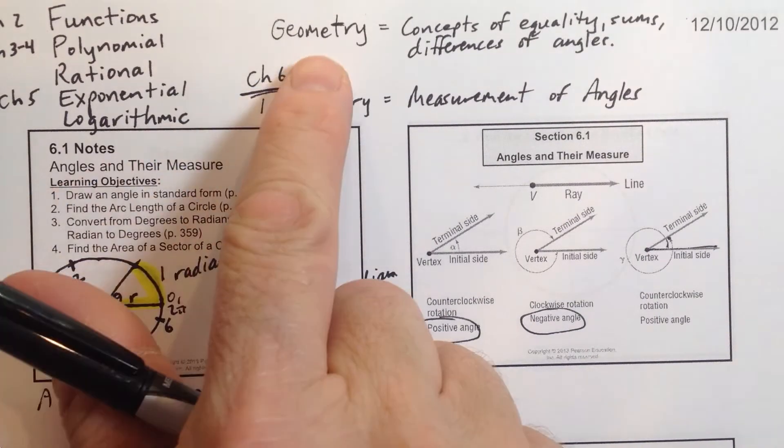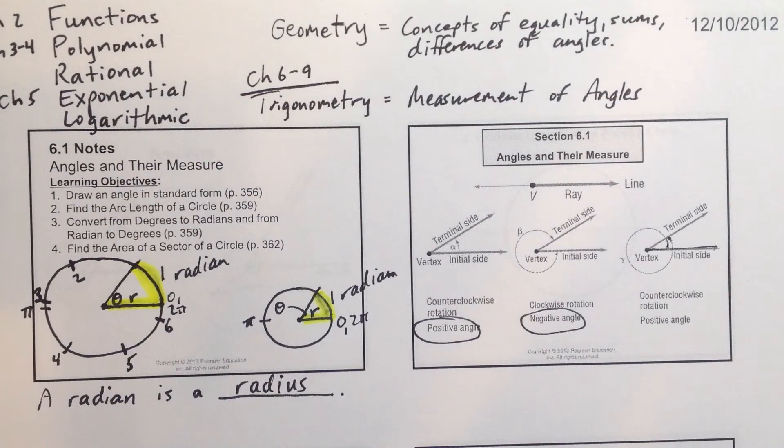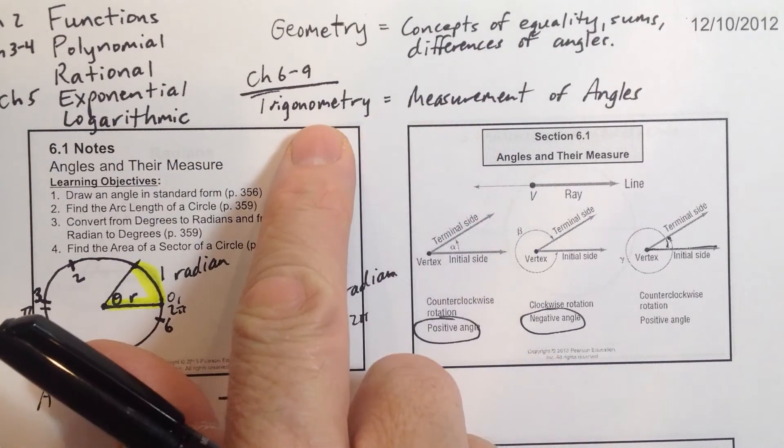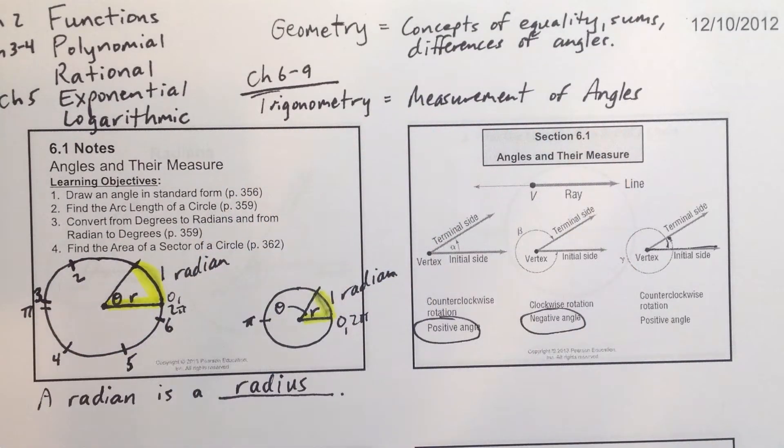Back in geometry we learned about the concepts of equality, sums and differences of angles. But again, the concept of trigonometry deals with the measurement of angles.